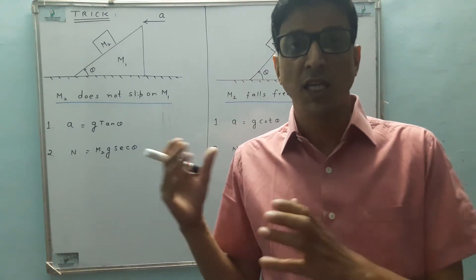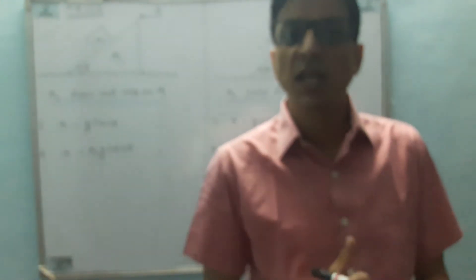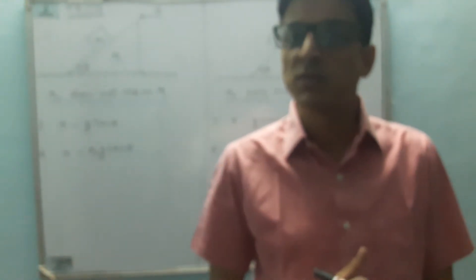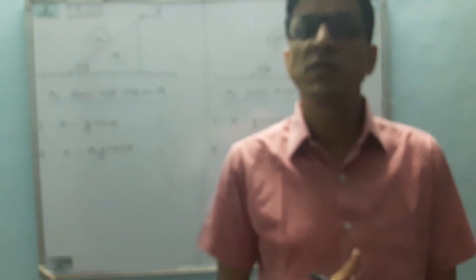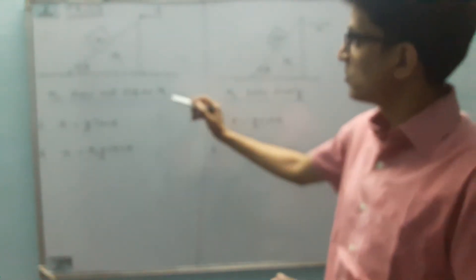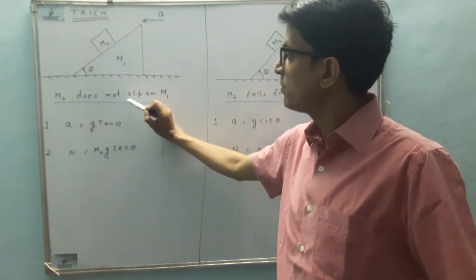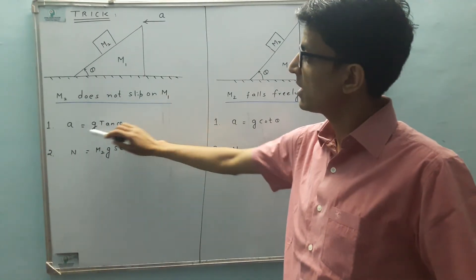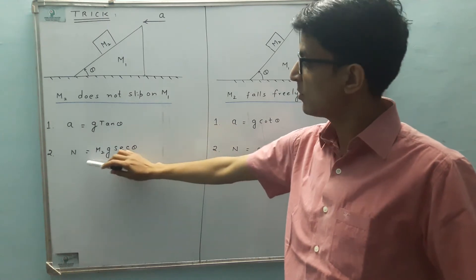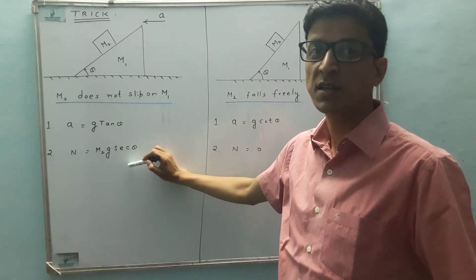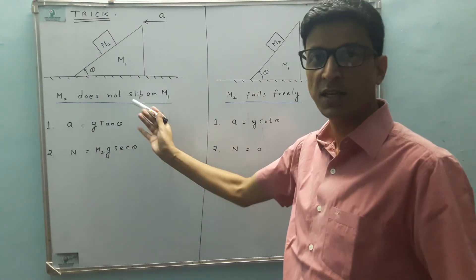So when you have learned the subject and you know the subject, then these tricks can be of some use to impress somebody. So let's see the trick in two popular cases. The first case is that m2 and m1, simple trick: acceleration equals g tan θ, normal reaction equals m2 g sec θ. Result is that you get it in 5 seconds.